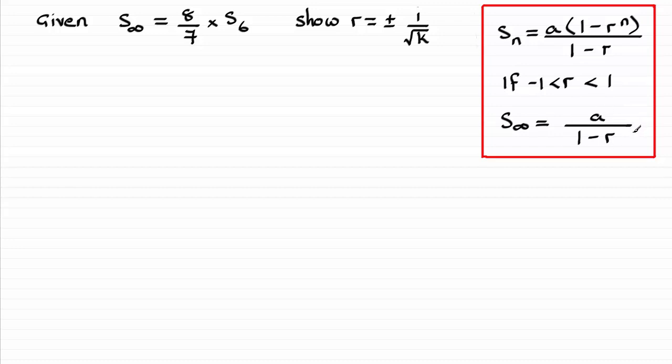So all I need to do is substitute the values into both the sum to infinity and the sum of the first n terms. So the sum to infinity is the first term A all over 1 minus the common ratio. And that's going to be equal to 8 sevenths times the sum of the first six terms. So we just let n equal 6. And that's going to be A times 1 minus r to the power of 6, all divided by 1 minus r.